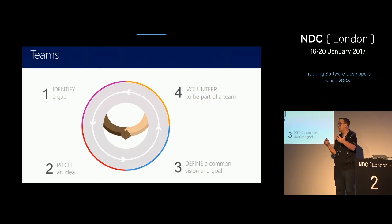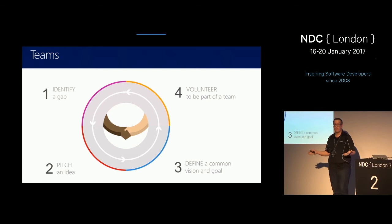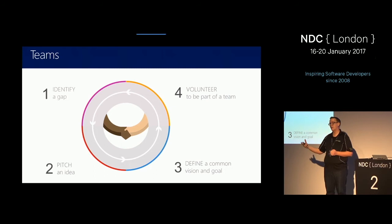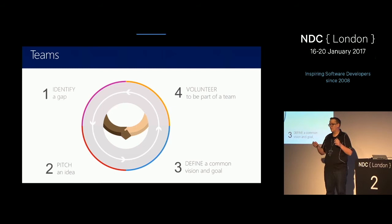So what does our process look like? One thing which is interesting is how do we start? There is some idea — someone thinks of something, we find a gap, or maybe a customer points us to a gap, or the product group asks us to do something. We start with an idea. Then we make sure we pitch the idea not only to Microsoft, but also to the ALM Rangers themselves, because we are all part-timers — we do it voluntarily and we decide what we want to work on. When the pitch succeeds, we define a concrete mission and goal, then form the team.